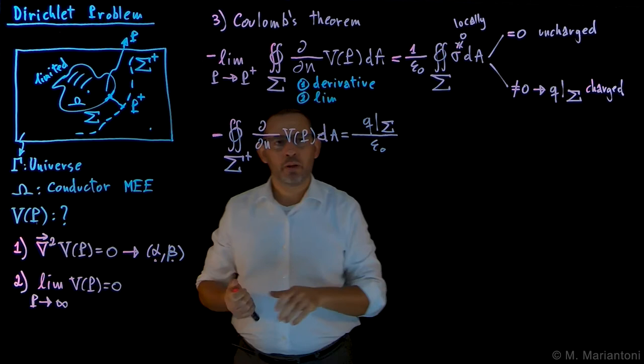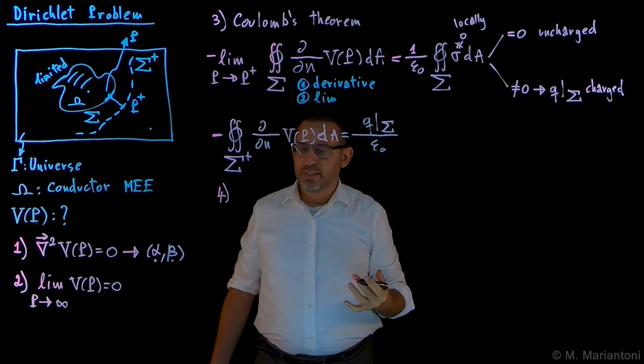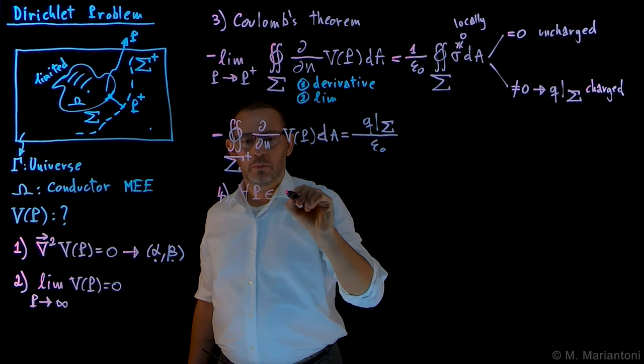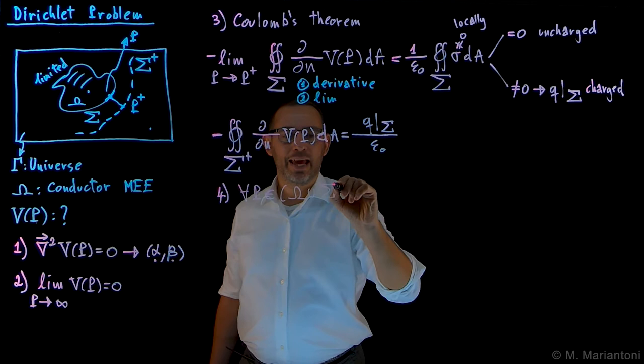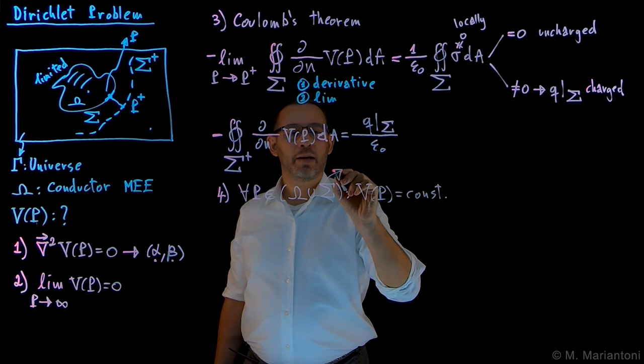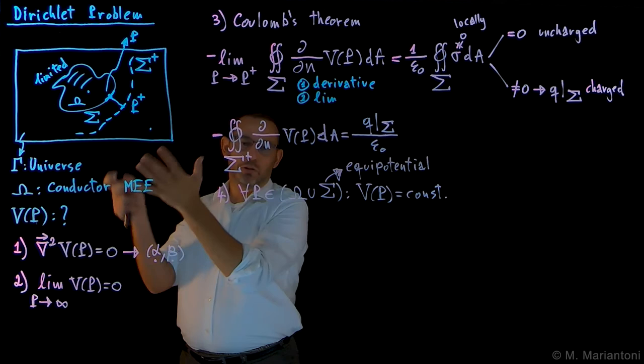This is the third step, and typically the third step is where students make mistakes, so this is the one you really want to understand well. The fourth step tells us that the electrostatic potential for each point in the region Ω ∪ Σ — that is, everywhere in the conductor — satisfies V(P) equals a constant. In particular, the fact that this is true on Σ means that Σ is an equipotential surface. This makes sense because it is a conductor in macroscopic electrostatic equilibrium.